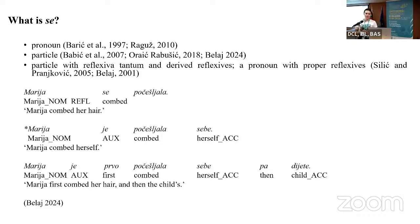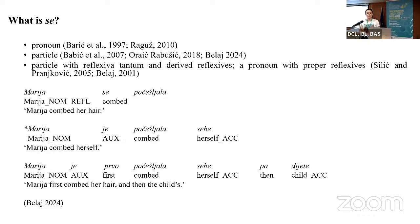In recent studies it has been shown that 'se' and 'sebe' are not interchangeable. For example, we can say 'Marija se počešljala' — Maria combed her hair — but we cannot say 'Marija je počešljala sebe' without context; it sounds unnatural to native speakers. However, we can say 'Marija je prvo počešljala sebe pa dijete' — Maria first combed her own hair, then the child's. So we need semantic and pragmatic reasons to use 'sebe' instead of 'se', and 'se' is an integrated part of reflexive verbs.